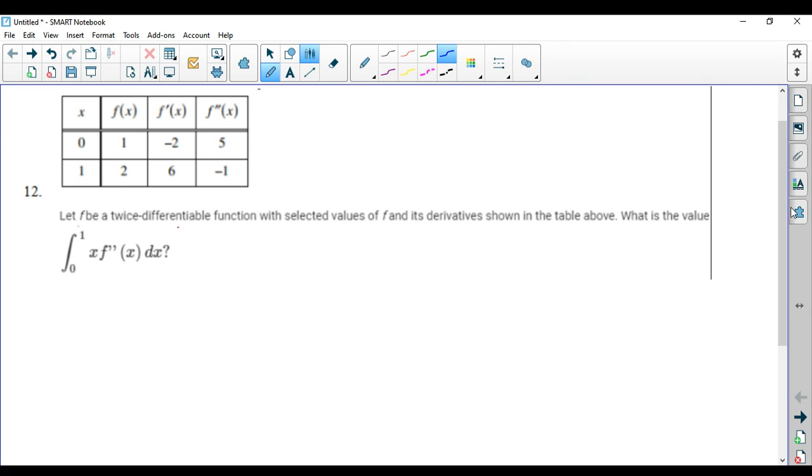I'll let u be x because that's the part that's going to differentiate down to nothing. And that means dv has to be the rest of it, which would make dv equal to f double prime of x dx.